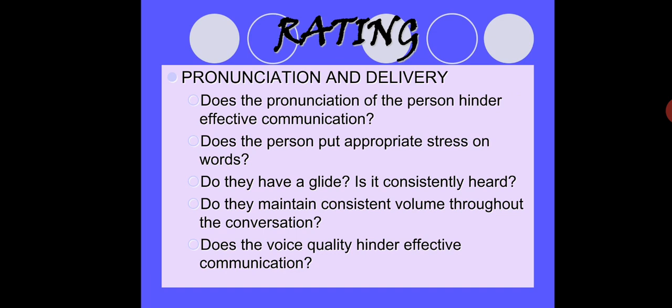Does a physical condition hinder effective communication? If you have a sore throat or your voice modulation isn't right — perhaps a husky voice — this will hinder effective communication. You need to tweak and manipulate your delivery accordingly. Volume must actually be stronger than your natural speaking voice, especially since masks muffle sound — you need to exert more effort.